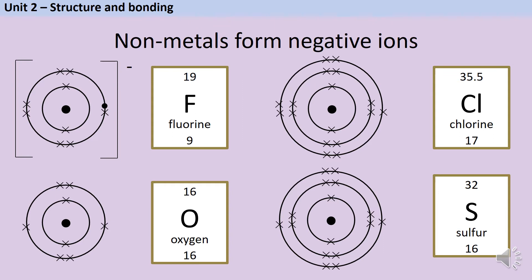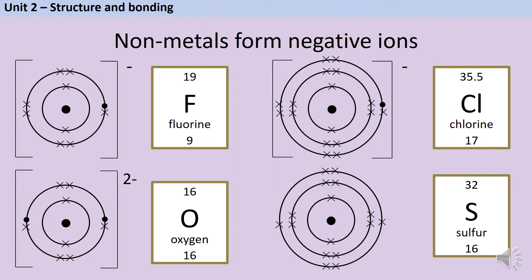If we look at oxygen, being in group six, it only has six electrons in its outer shell rather than seven like fluorine, so to gain a full outer shell it needs to gain two electrons. Each one has a single negative charge, so this ion has twice as much negative charge as the fluoride ion — we draw square brackets and write two minus. Chlorine and sulfur, although larger atoms, are from group seven and group six respectively, so they follow the same pattern: chlorine gains one electron giving a single negative charge, and sulfur gains two electrons giving a two minus charge.